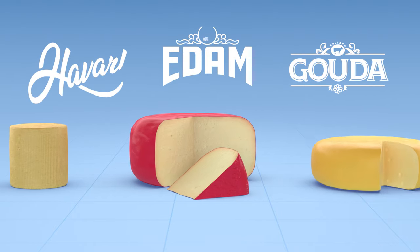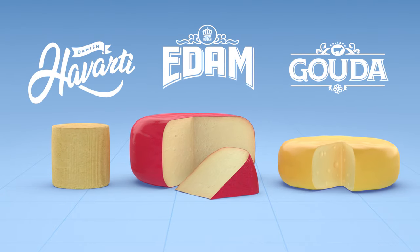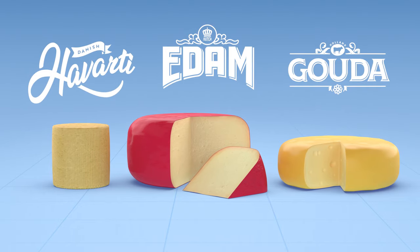What differs is the production method. Here we will focus on the production of semi-hard cheeses, such as Edam, Havati, Gouda and Emmental.